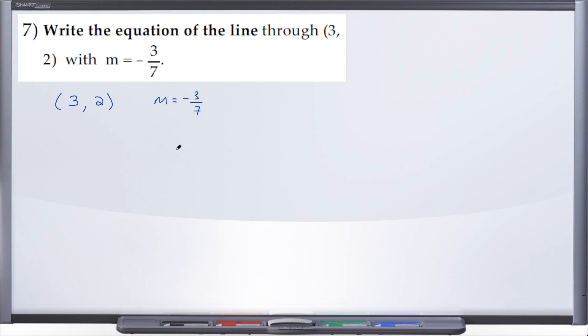And this question is similar to number six except now we have been given a point that is not a y-intercept and a slope. So we're not going to use the slope intercept form, we're going to use an alternate form for a line.